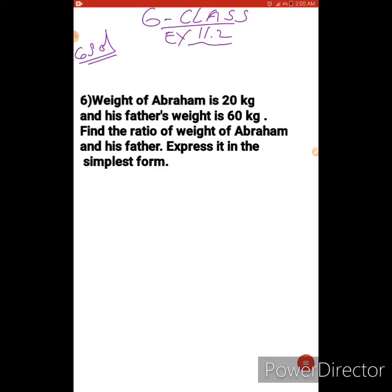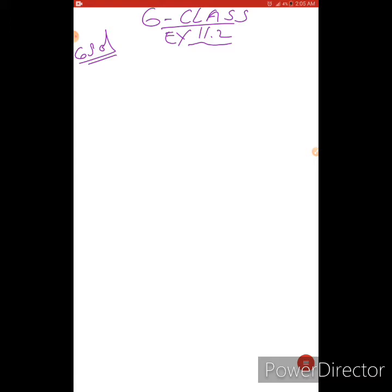Here the question is very simple. Abraham and father's both ages are in kg. Just to find the ratio, then write in the simplest form. Shall we begin?